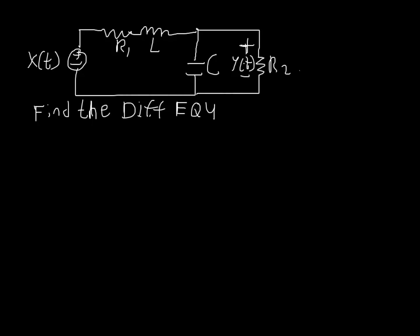So the first thing we want to do is define some currents to help us out. I'm going to define the current going through these two resistors as i sub 0 of t, and then this one going through the capacitor is i1 of t, and then this one here is i2 of t, and that will just come into play later.